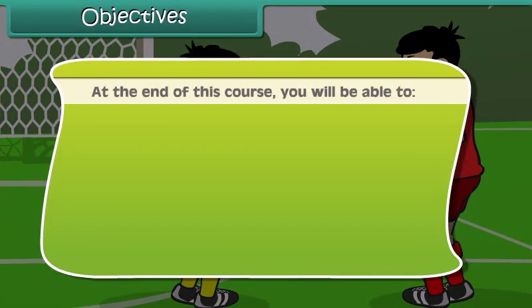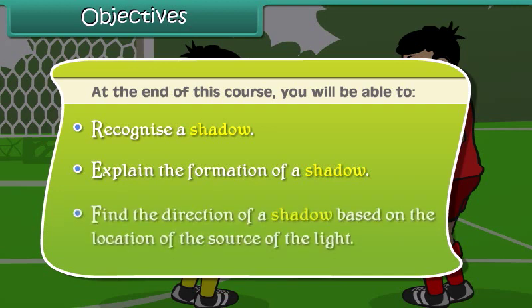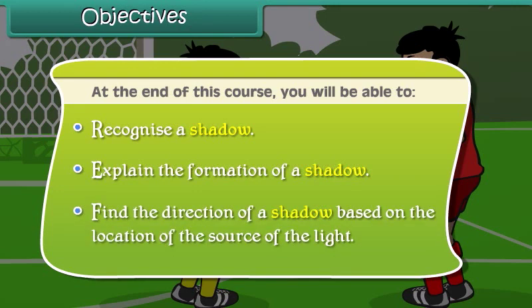At the end of this course, you will be able to recognize a shadow, explain the formation of a shadow, and find the direction of a shadow based on the location of the source of light.